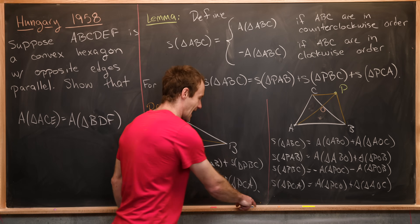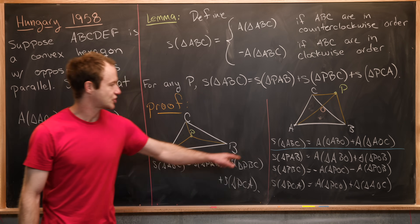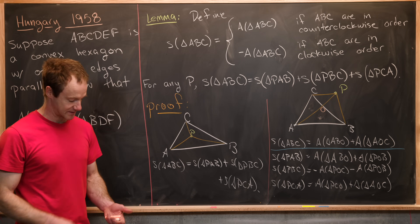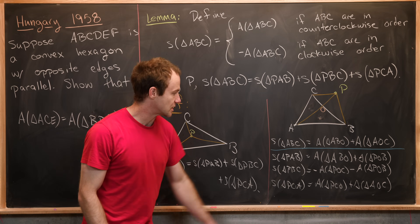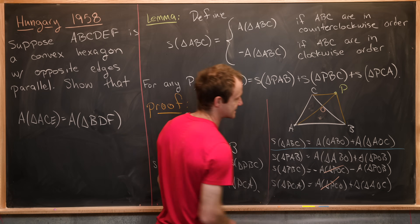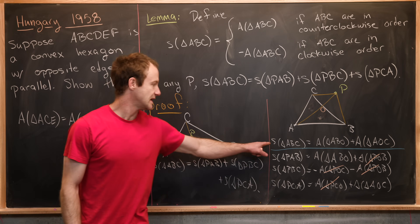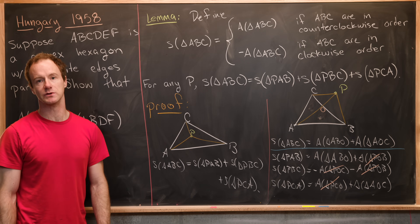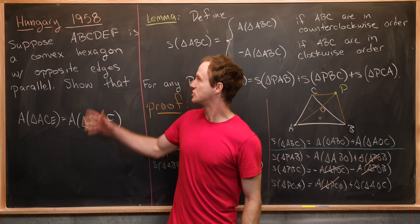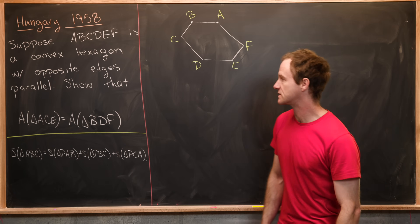Everything below the blue line gets added and should equal everything above it. Adding up the right-hand sides, the area of POB cancels with itself, the area of POC cancels with PCO, and we're left with exactly what we need to match the left-hand side. With this result established, we're ready to jump into the solution of our main problem.